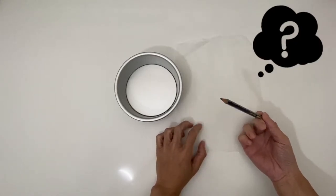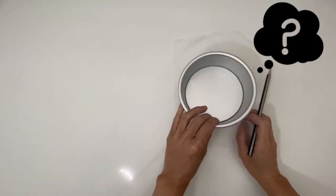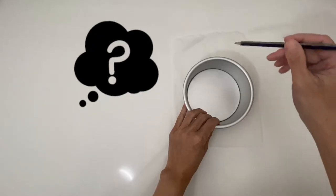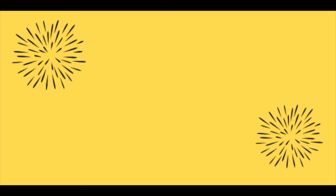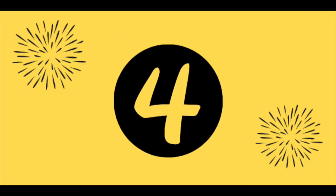Do I really need a pencil to trace the shape of the tin and then cut it out? No, you don't. Let me show you how I line four different sizes of baking tins in a quick and easy way.